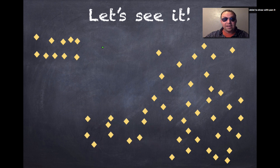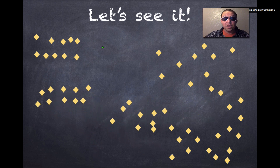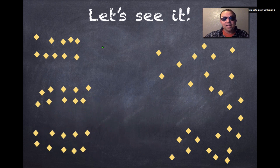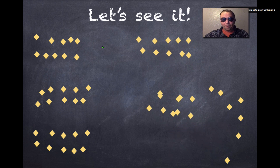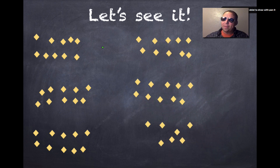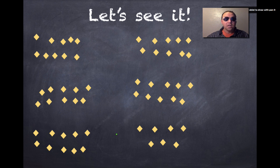I'm gonna pull off another group of 10, and another group of 10, and another group of 10, and another group of 10, and another group of 10. There are some left over. Let's see how many are left — one, two, three, four, five, six, seven. Not quite a group of 10.